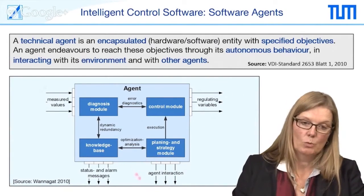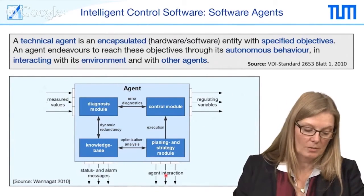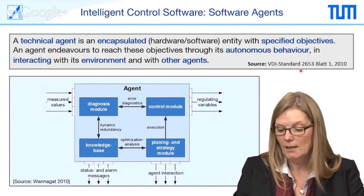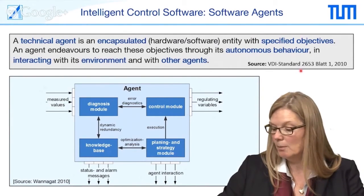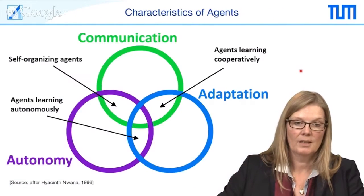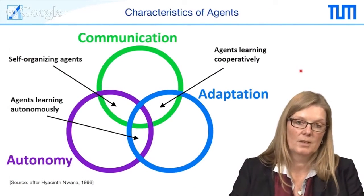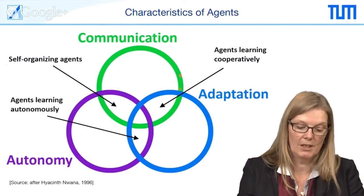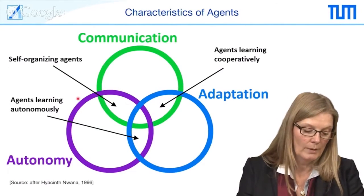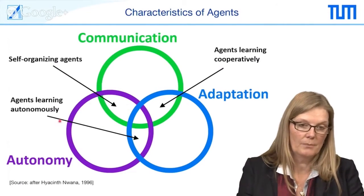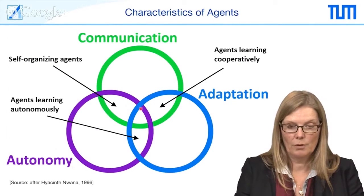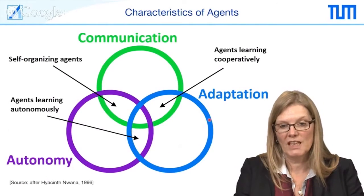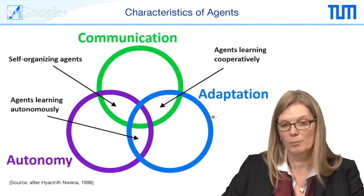We also have interaction with other agents, and we can share status and alarm messages. All this is standardized by the committee I am head of. Let's summarize the characteristics of an agent: we have communication, which is essential; we have the autonomy of the agent; and we also have adaptation — the agent is able to adapt to its environment.